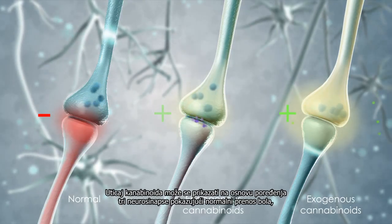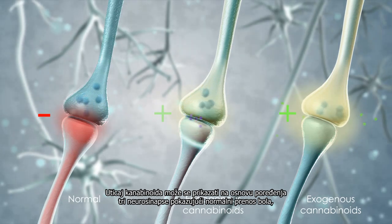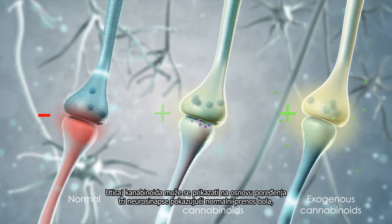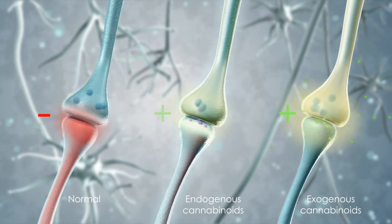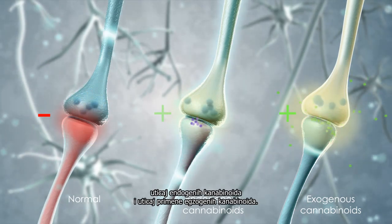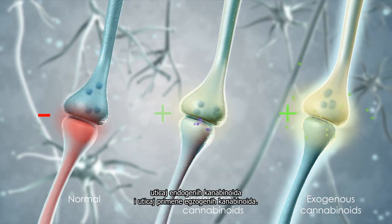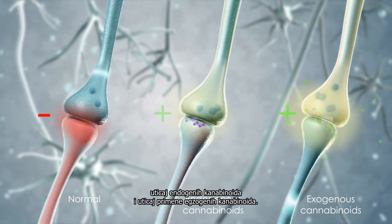The effects of cannabinoids may be illustrated by comparing three neuronal synapses showing normal pain transmission, the influence of endogenous cannabinoids, and the influence of exogenous cannabinoid administration.